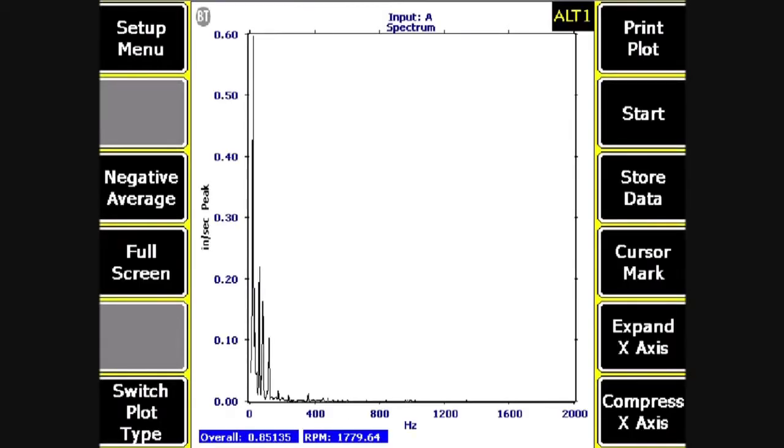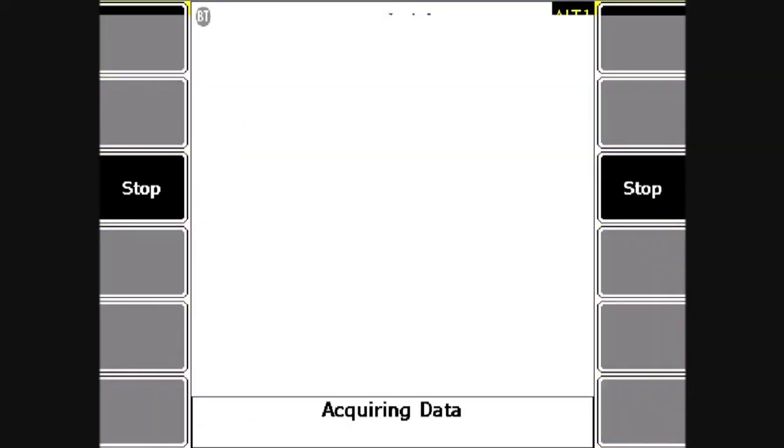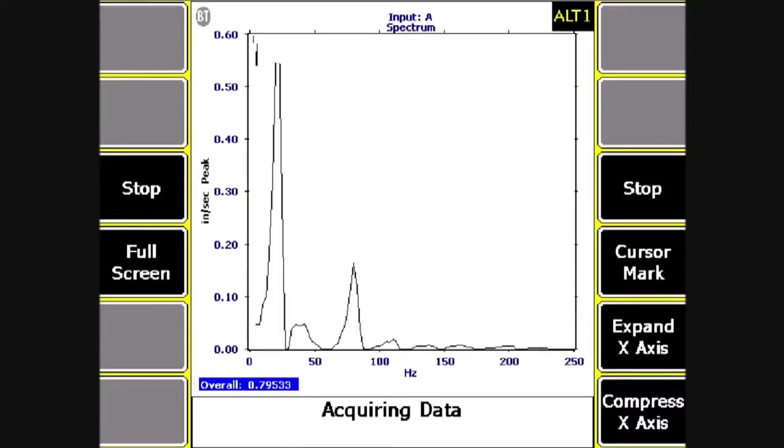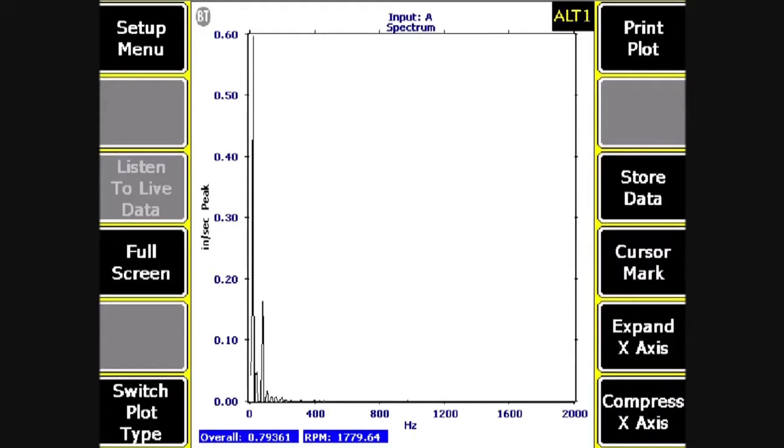Now F3 says negative average. So now what it's doing is recording the vibration just with the running of the machine, and it leaves me with the energy from the impact that I did. So I can press stop, F3, and expand the X axis.